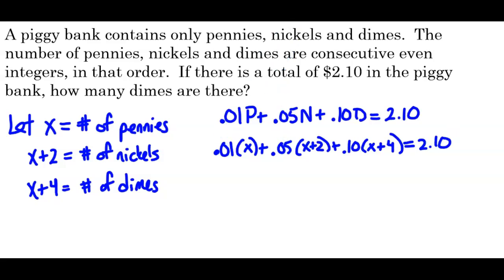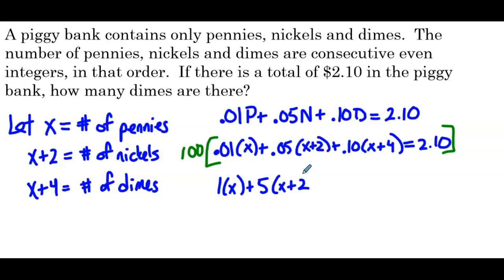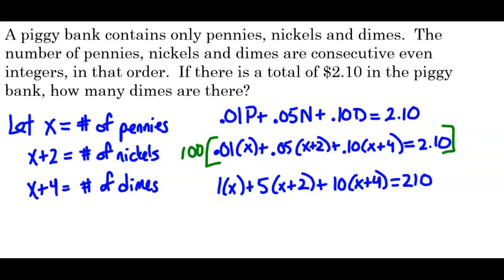It's best to multiply the equation by 100, though if you prefer to work in decimals, by all means do so. Multiplying by 100 gives: 1 times x plus 5 times (x plus 2) plus 10 times (x plus 4) equals 210. For example, 100 times 0.05 times (x plus 2) means we do 100 times 0.05 first, which is 5, then multiply the 5 by (x plus 2). That's why this is our simplification when we multiply each term by 100.